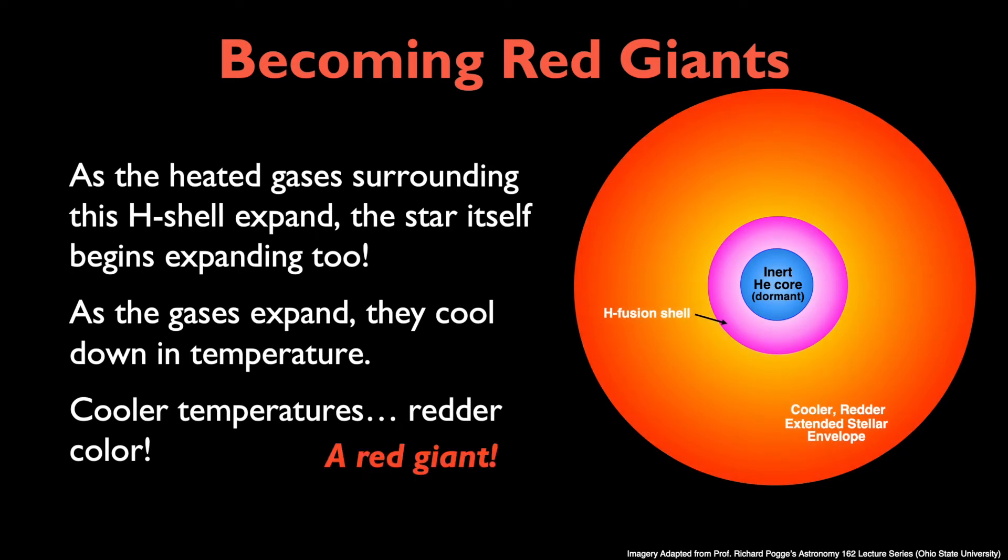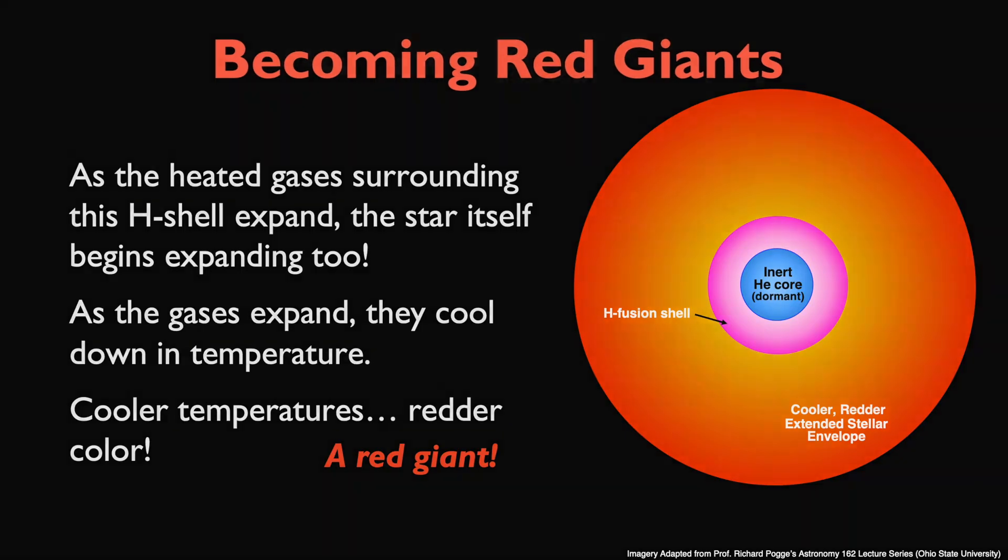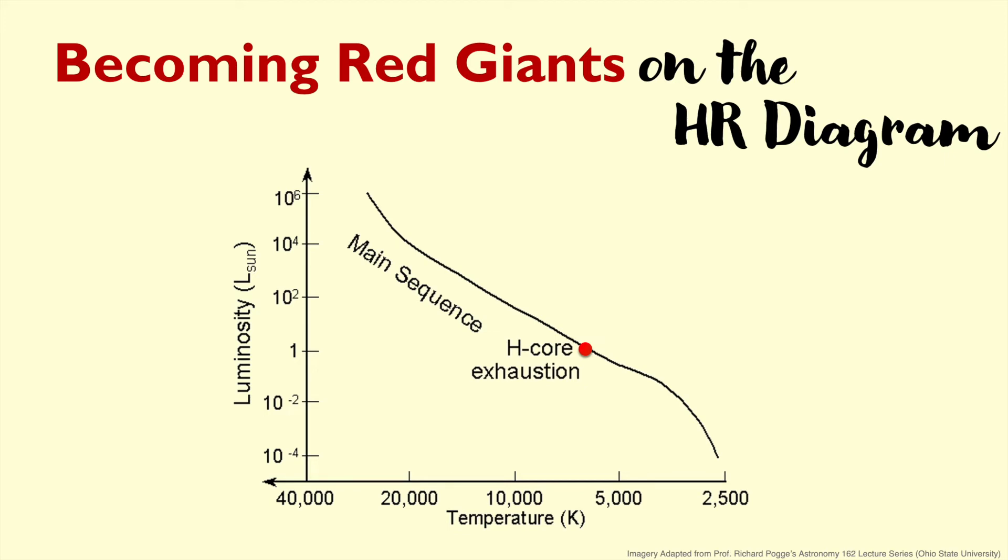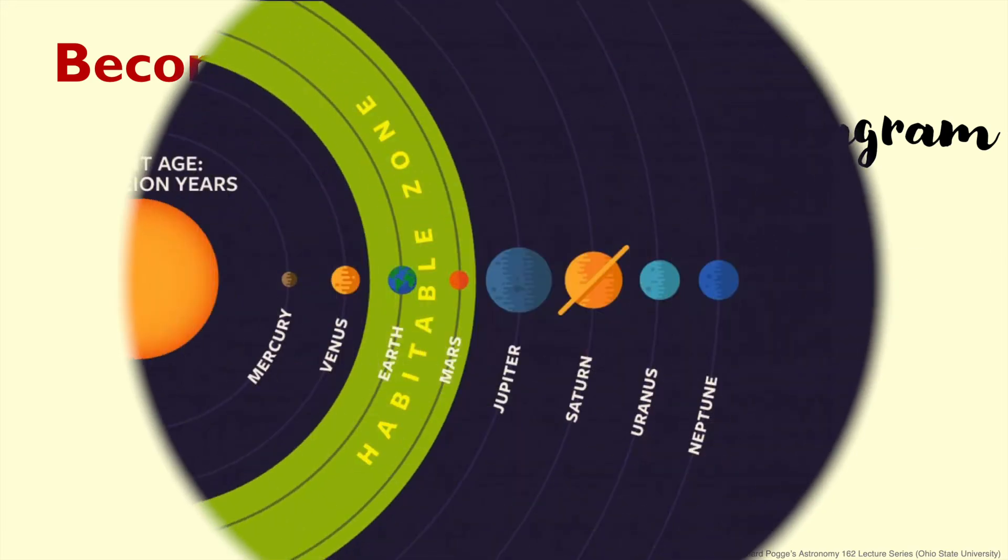If we were to plot the physical changes in the star as it evolves, we can see that the star begins to move off the main sequence just after hydrogen core exhaustion occurs. As it cools down, we can see the star move to the right on the HR diagram towards cooler temperatures. As it becomes brighter, it moves up the HR diagram towards brighter luminosities, resulting in the creation of the red giant branch of the HR diagram.